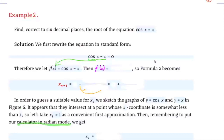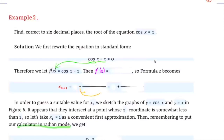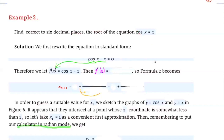Now we're going to use Newton's method to approximate the root of the equation cosine x equals x. Notice that this equation is a transcendental equation. We're going to approximate the root of this equation correct to 6 decimal places using Newton's method.